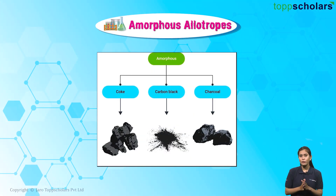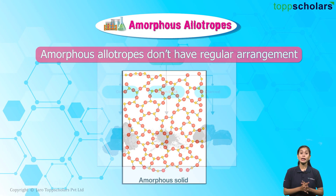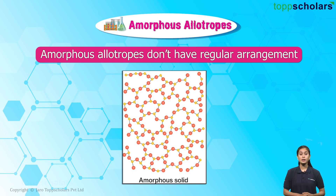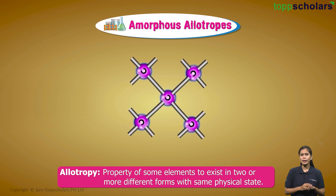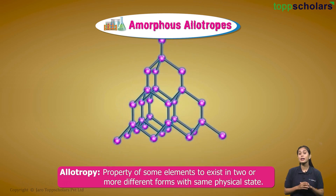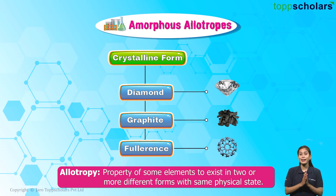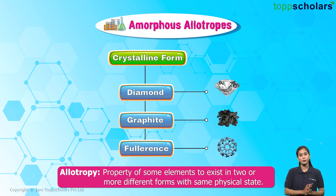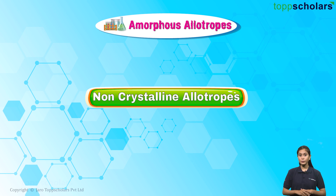Talking about amorphous allotropes of carbon now. In amorphous allotropes of carbon, the arrangement is not regular. We have already learned that allotropy is the property of an element due to which it can exist in two or more forms differing in the way in which atoms are bonded to each other but still have the same physical state. Let us discuss the non-crystalline or the amorphous forms of carbon.